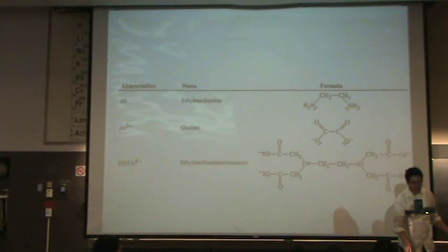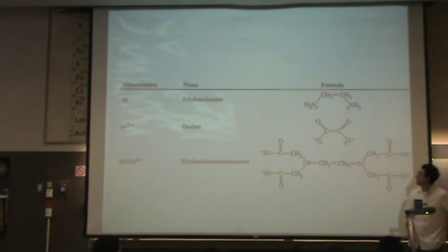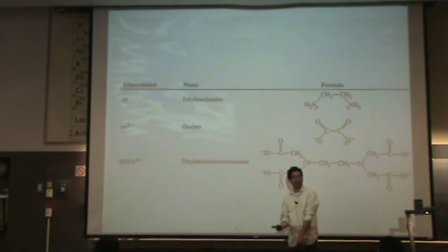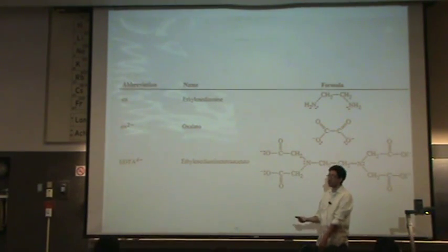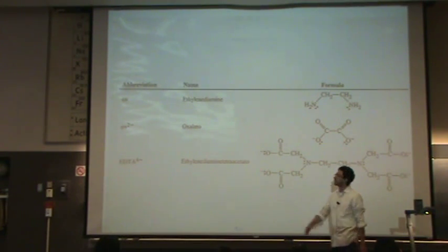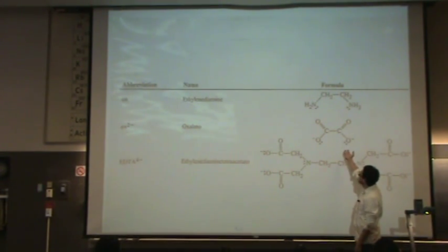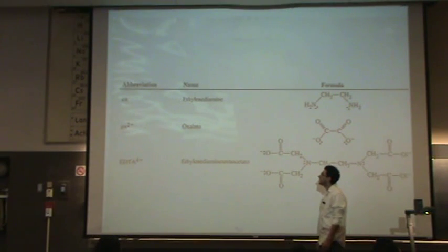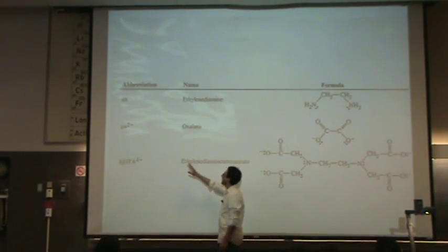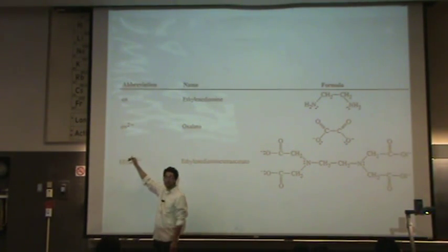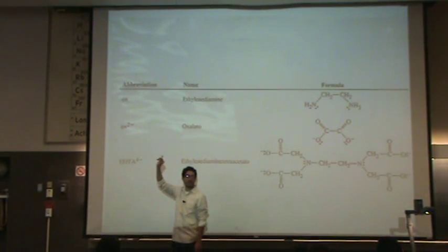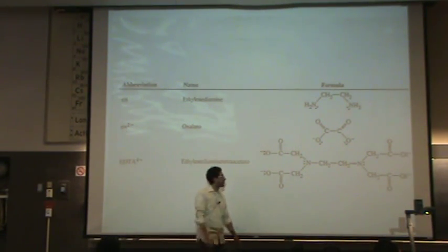The next one you won't see as often is oxalato. It comes from the oxalate ion. Thus we put an O as the suffix. Remember like oxalic acid. That's oxalate. That's this. That's the oxalate ion. But it's abbreviated OX. It has a minus two charge, where the ethylenediamine has no charge. So minus two for that one.